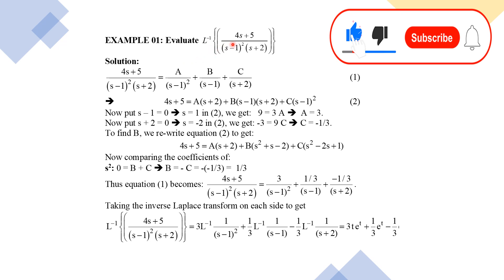Evaluate the inverse Laplace of (4s + 5) / [(s − 1)² (s + 2)]. Here the degree of the numerator is less than the degree of the denominator: degree of the numerator is 1 and degree of the denominator is 3. In this condition we use the partial fraction method. So (4s + 5) / [(s − 1)² (s + 2)] — the denominator contains a repeated linear factor.